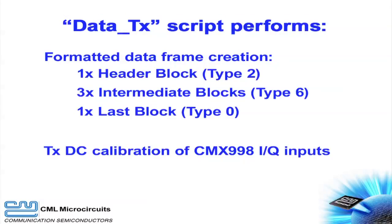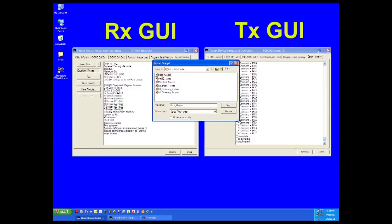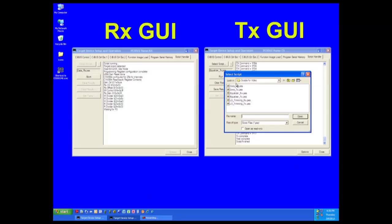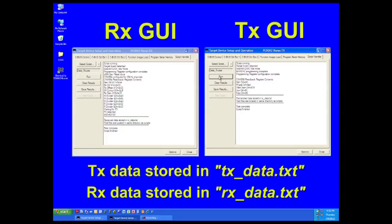The final script will pass formatted data from the transmit boards to the received boards. In addition to creating a formatted data frame, the transmit script also configures the CMX7163 to perform DC calibration of the CMX998 IQ inputs. In the received GUI, find and run the Data RX script. When prompted, go to the transmit GUI and launch the Data TX script. The transmitted and received data are written to text files located in the same directory as the scripts. This allows you to compare what was transmitted to what was received.